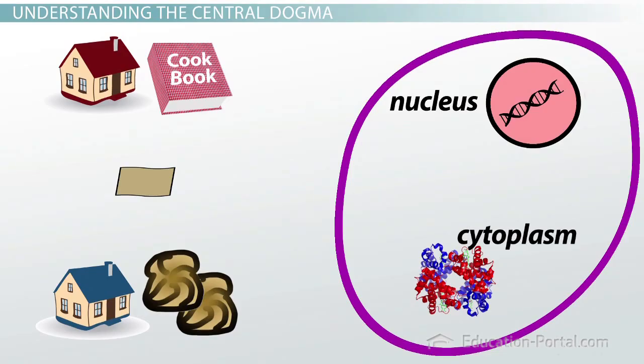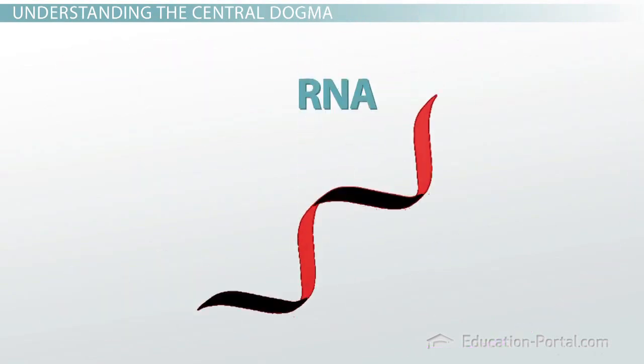So just like my recipe had to be copied, the instructions in DNA have to be copied into some other form that can travel from the nucleus to the site where proteins are made. That other form is RNA.